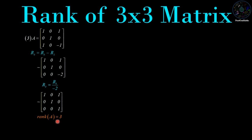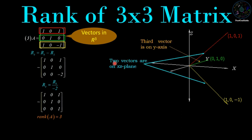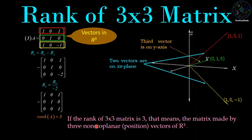Now we understand rank equal to 3. We consider [1, 0, 1], [0, 1, 0], and [1, 0, -1] as vectors of R3 and plot them in space. The two vectors [1, 0, 1] and [1, 0, -1] lie on the xz-plane, while the third vector [0, 1, 0] lies on the y-axis. We cannot find any single plane which covers all three vectors — they lie in different directions. Therefore, if the rank of a 3×3 matrix is 3, the matrix is made by three non-coplanar position vectors of R3.